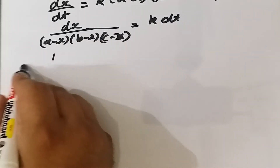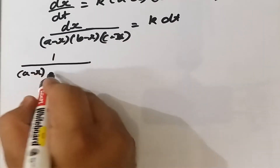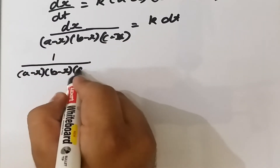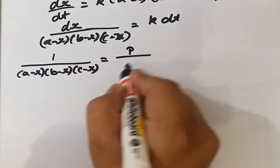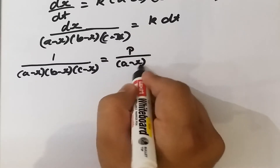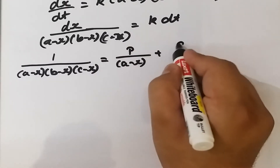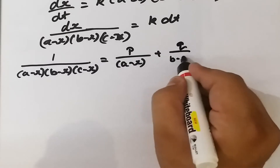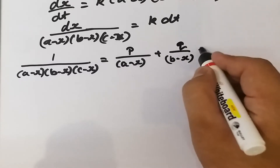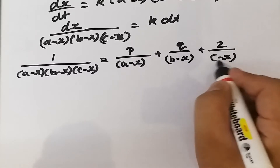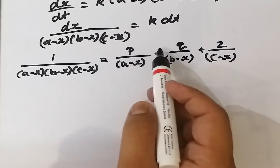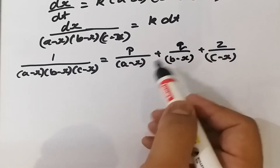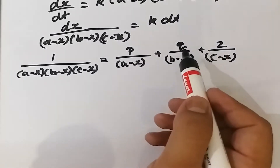To solve this, we resolve the term 1 upon (a minus x)(b minus x)(c minus x) into partial fractions: it equals P upon (a minus x) plus Q upon (b minus x) plus Z upon (c minus x), where P, Q, and Z are constants whose values we need to find.